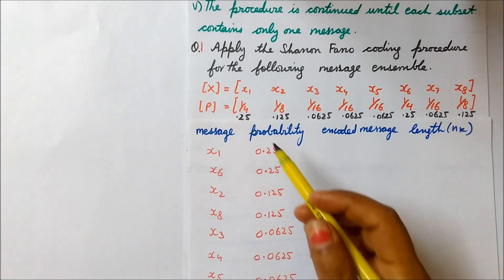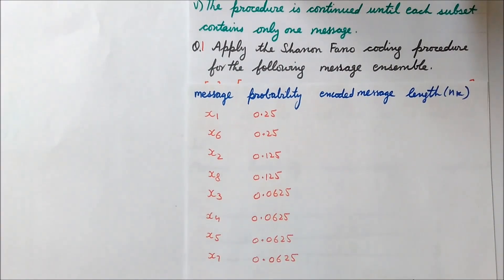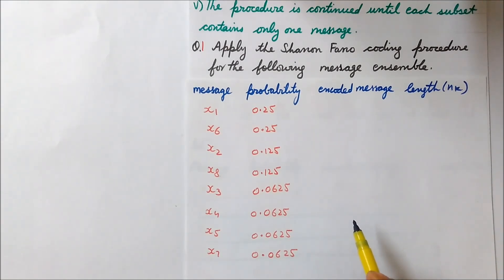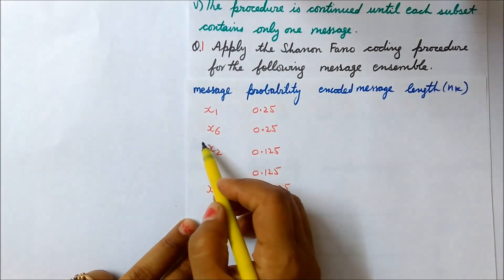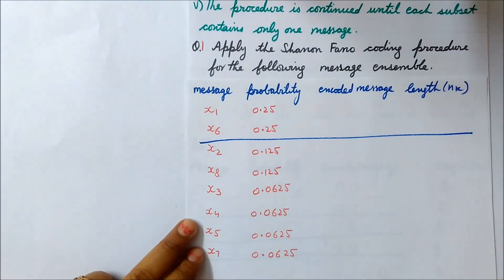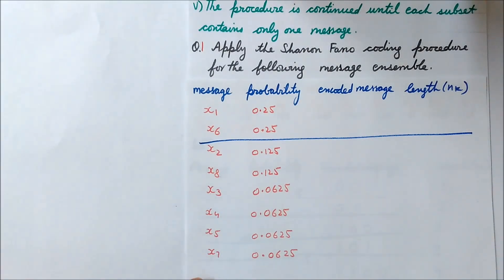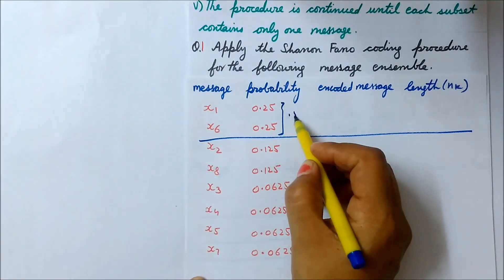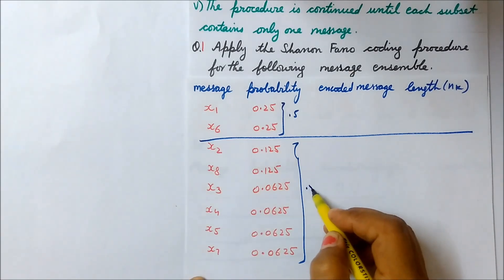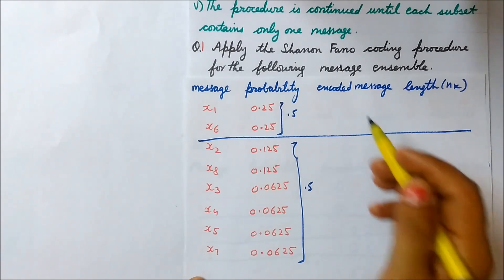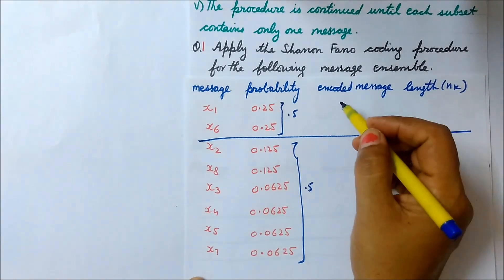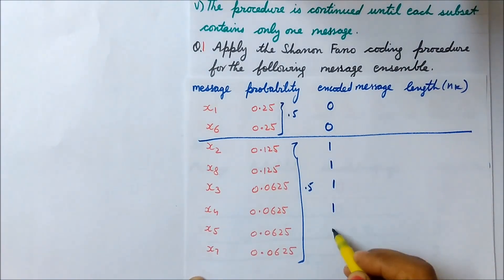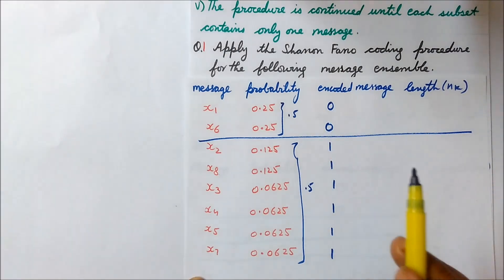Now the real technique starts. We divide all eight messages into two groups such that the two groups have equal probabilities. Here I have taken x1 and x6 as one group, and x2 to x7 as the other group. Adding the probabilities of x1 and x6 gives 0.5, and adding the probabilities of x2 to x7 also gives 0.5 — so they are exactly equal. A partitioning line is drawn: above the line I give a 0 code, and below the line I give a 1 code.